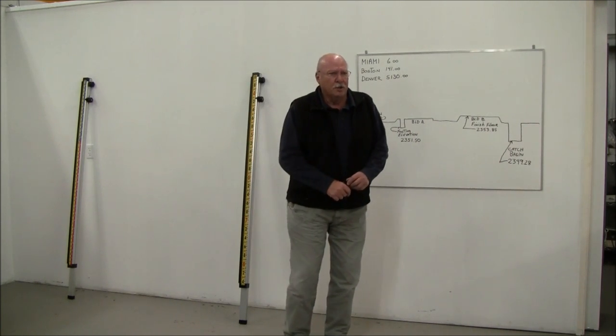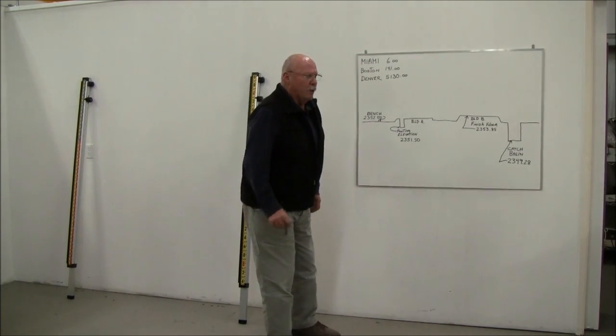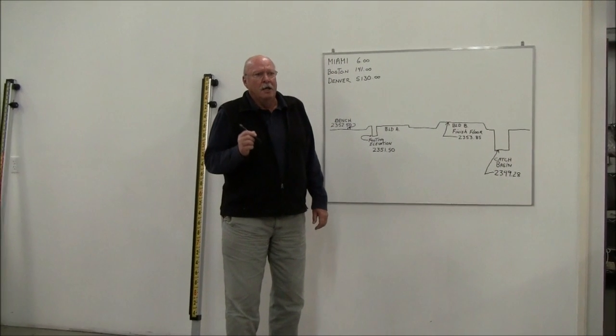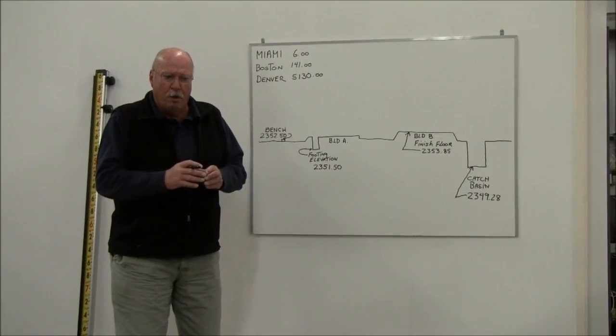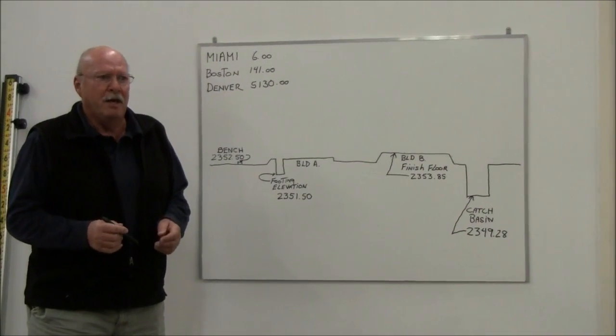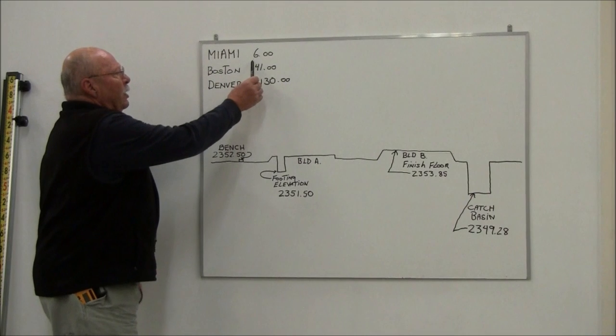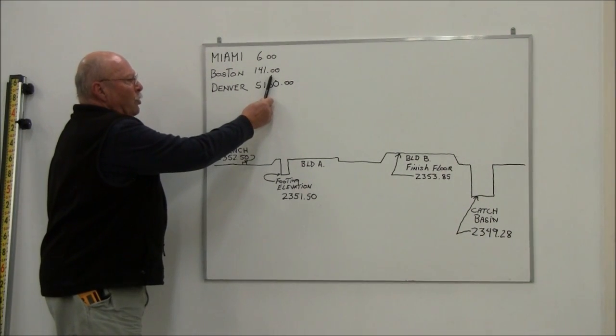Let me start by illustrating how those elevations come about. When a job is set up, typically the job is depicted in true elevation with a starting point, which is called your benchmark. That benchmark, for example, if you're in Miami, it could be 6 feet. If you're in Boston, it could be 141 feet.